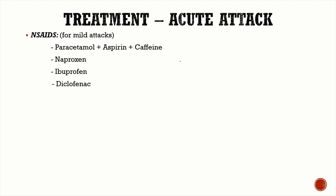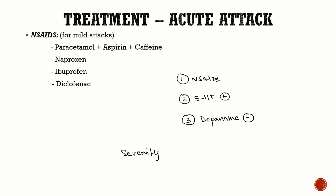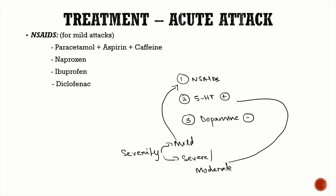For an acute attack of migraine, three important drug classes are used: NSAIDs, 5-HT agonists, and dopamine antagonists. Drug choice depends on severity. For mild attacks, NSAIDs are used — commonly a combination of paracetamol, aspirin, and caffeine, or naproxen, ibuprofen, and diclofenac. For moderate to severe attacks, triptans are used.